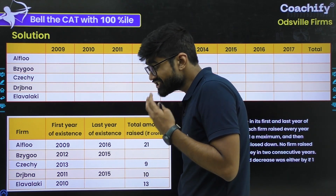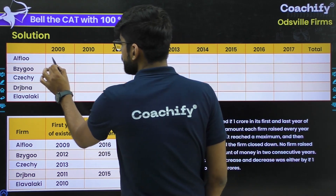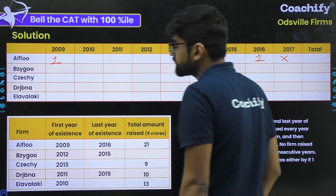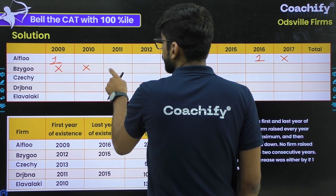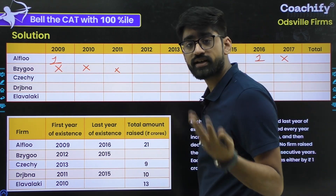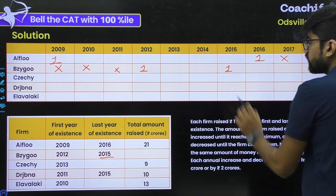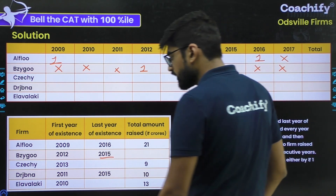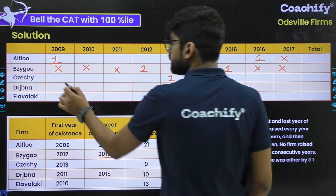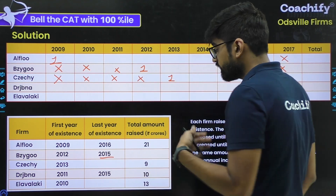They are not working in 2017. For B, it comes into existence in 2012, so in 2012 it is raising 1 CR, and 2015 is its last year of existence, so in 2015 it is also raising 1 CR. For C, 2013 is the first year of existence, so it is raising 1 CR in 2013. We are not provided with C's last year — we will figure it out.